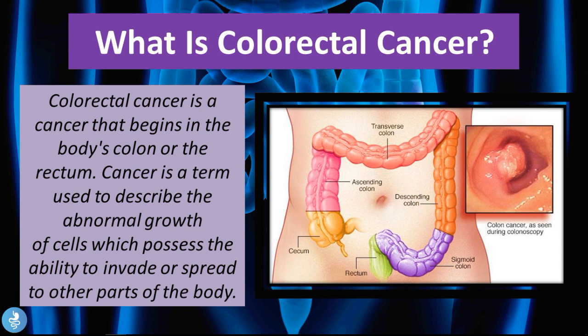In the diagram on the right we have the basic anatomy of the colon. The colon is split into different segments: the cecum, the ascending colon, the transverse colon, the descending colon, the sigmoid colon, and the rectum. Colorectal cancer deals with any form of cancer that develops within these segments. This video focuses on cancer of the ascending, transverse, descending, sigmoid, and rectal parts.